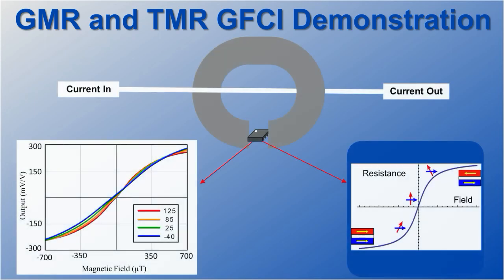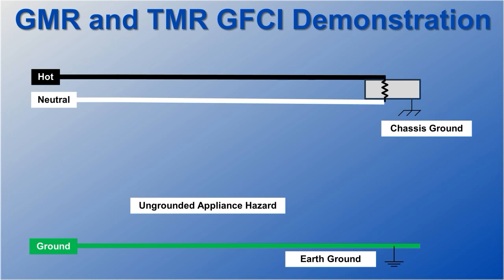We're demonstrating leakage current detection as low as 1 milliamp using NVE's high sensitivity GMR and TMR magnetic field sensors. Low current detection is essential for safety in ground fault circuit interrupt applications where an electrical hazard is possible.